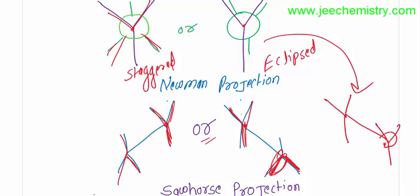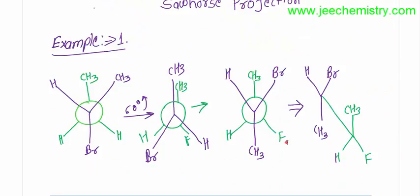After that, we can rotate and we can get the structures. This will be in this equivalent format. Here are the examples. This is a staggered format, and this needs to be rotated. Now this structure we are getting back to back. After rotation, this format we are getting — in a polar direction. Now this can be converted to a Sawhorse position formula.